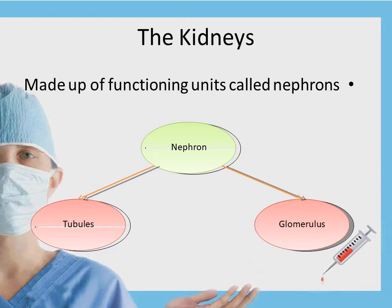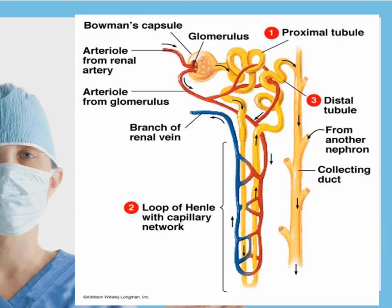The kidney is made up from a functioning unit called nephrons. In addition to the tubules and glomerules, all of these make the nephron. This is a diagram that shows the components of the nephron.